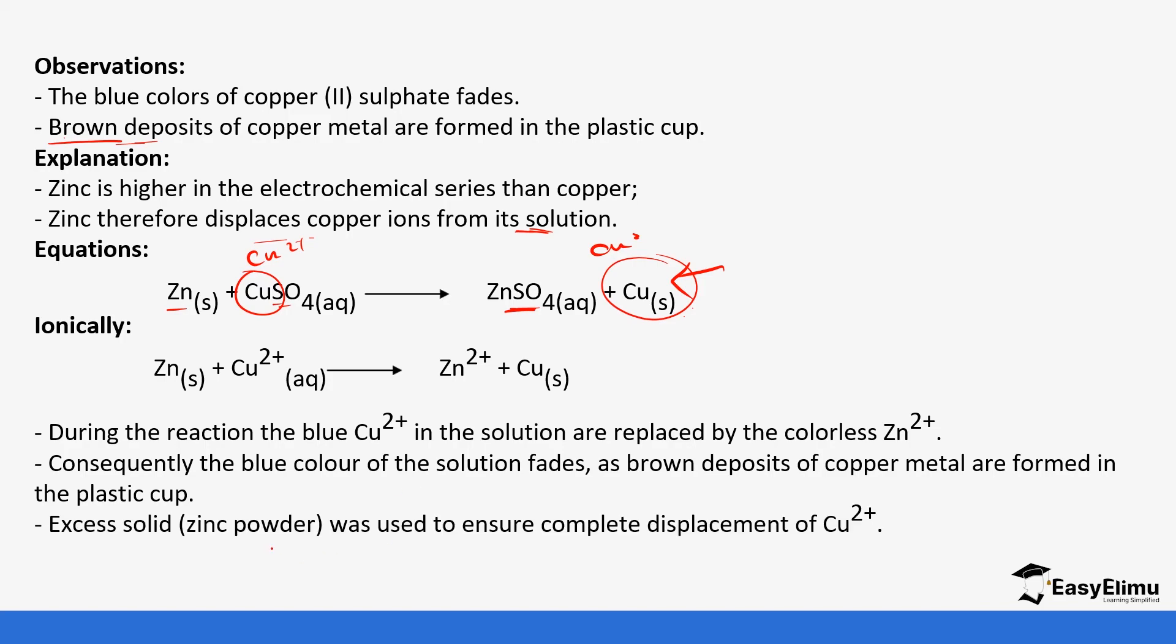So excess zinc powder is used to ensure complete displacement. So you'll notice it will always be a bit excessive. So make sure you're able to identify if it's excess or not. But you'll notice when you are calculating the molar enthalpy, you'll use the moles of the copper sulfate.